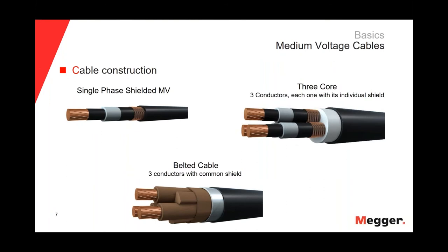Besides the single-phase cable, we can have other constructions. For instance, we can have the three-core cable in which we have three conductors, each one with its individual shield or concentric. And then we have the belted cable in which we have three conductors with a common shield. We can have different constructions for medium voltage cables and that will affect how we connect our test equipment to do the VLF test or the tan delta test.